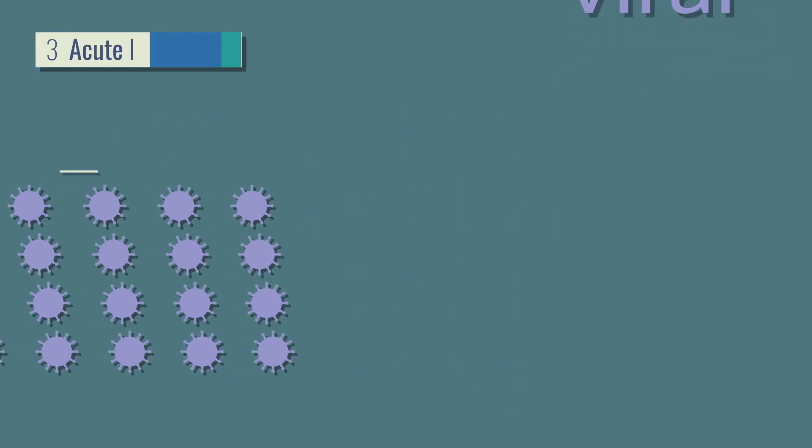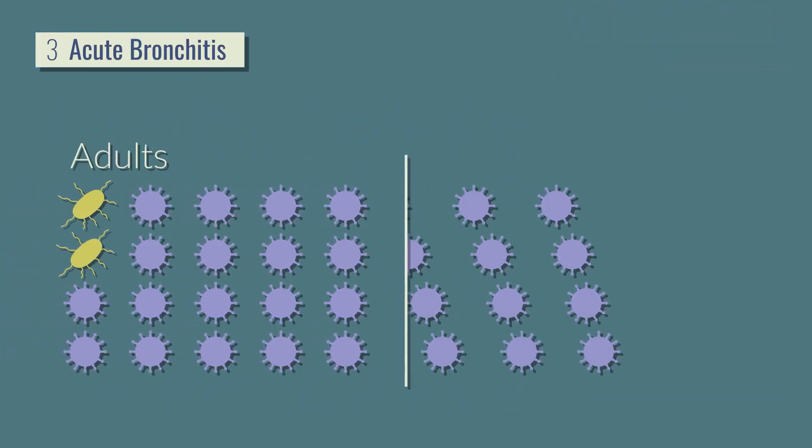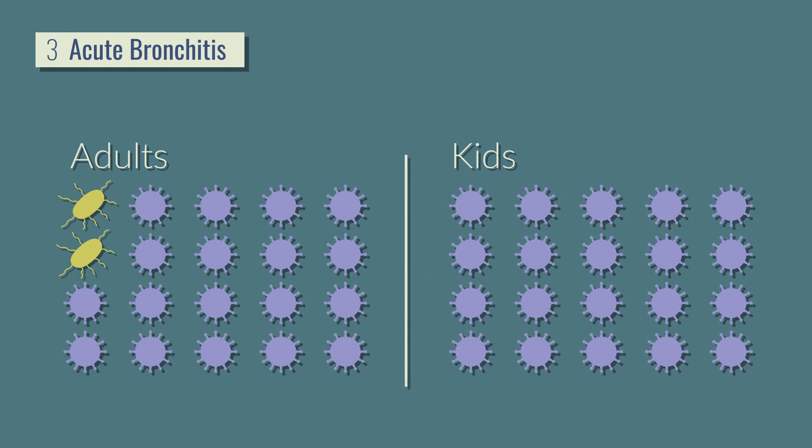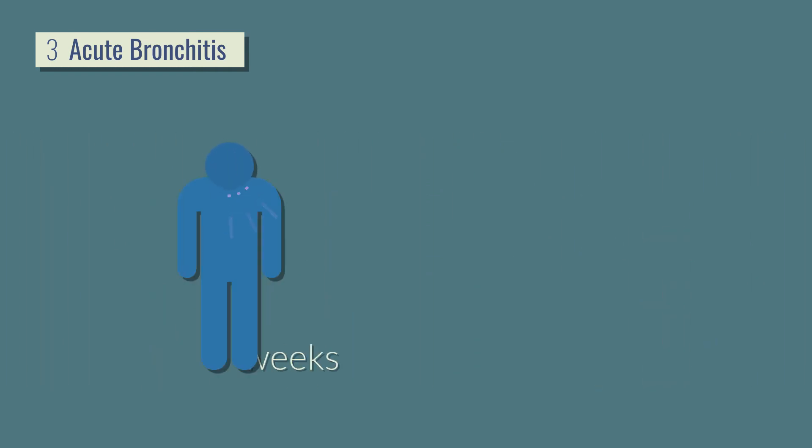Third, 90% of all acute bronchitis cases are viral, including almost all bronchitis in kids. Viral coughs often last two to three weeks and aren't helped by antibiotics.